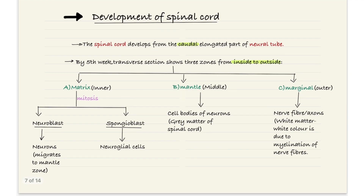Next, we will jump to the development of the spinal cord. The spinal cord develops from the caudal elongated part of the neural tube. By the fifth week, the transverse section shows three zones from inside to outside: the inner matrix zone, the middle mantle zone, and the outer marginal zone. The matrix zone after mitosis gives rise to the neuroblast and the spongioblast. The neuroblast gives rise to neurons, which migrate to the mantle zone. The spongioblast gives rise to neuroglial cells, which are the supporting cells. The mantle zone gives rise to the cell bodies of neurons that will form the gray matter of the spinal cord, and the marginal zone gives rise to the nerve fibers or axons — the white matter, which is white in color due to myelination.